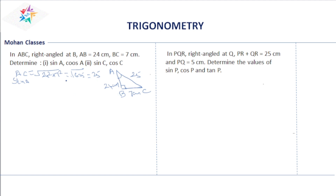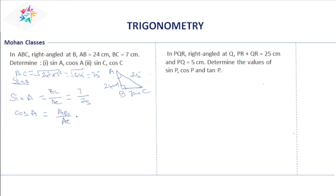Sin A equals opposite by hypotenuse, that is BC/AC = 7/25. Cos A equals adjacent by hypotenuse, that is AB/AC = 24/25.